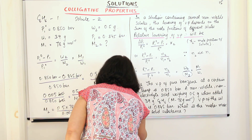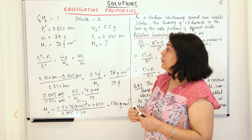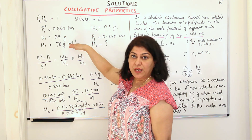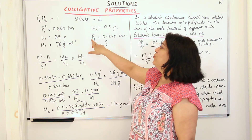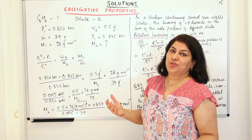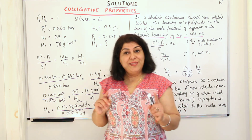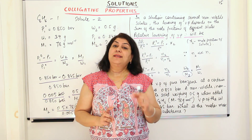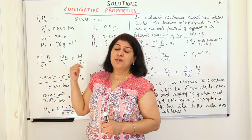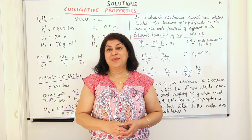The molar mass comes out to be 170 grams per mole. It was a simple problem — you were given P1⁰, W1, M1, W2, and P1, and M2 was to be calculated by simple substitution. With this, I will finish this video. In the next video, I will solve a couple more problems on this colligative property — relative lowering of vapor pressure — and then we will proceed to the other colligative properties.